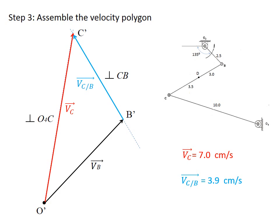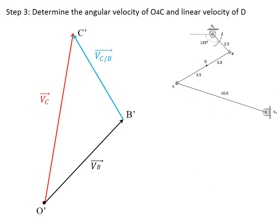Measuring these two vectors: the magnitude of the velocity of point C is 7 cm/s, and the magnitude of the relative velocity of C versus B is 3.9 cm/s. In the next step, we determine the angular velocity of O4C. The angular velocity of link 4 equals the linear velocity divided by the length of link 4 (O4C): 7 cm/s divided by 10 cm gives 0.7 radians per second.